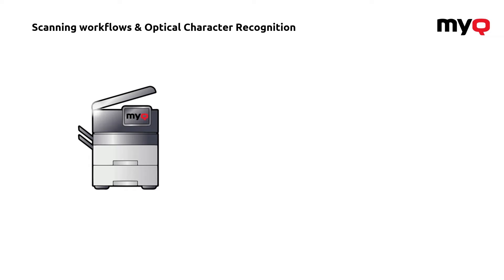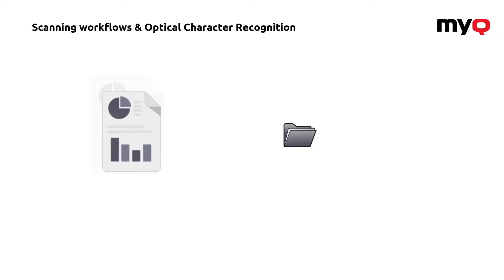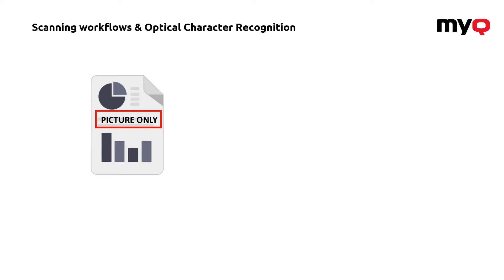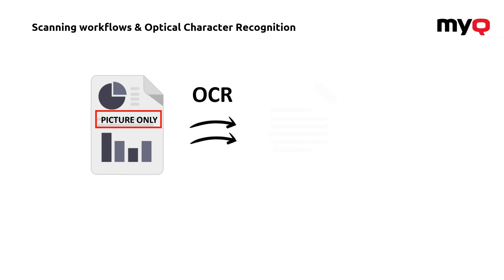The most common problem of scanning any file using a machine is that what you get is actually only a picture of that file. It doesn't matter what the output format is — if it's a PDF, a TIFF, JPEG, or any other format — it will only be a picture, and that way if you would like to extract data from it, you will not really be able to do so. What OCR or optical character recognition does is it automatically analyzes the document and is able to extract the text into a searchable and editable form.